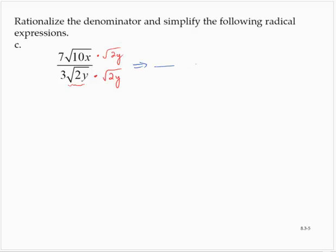So that would give me in the numerator, 7 times the square root of 20xy. And in the denominator, I would have 3 times the square root of 4y squared.